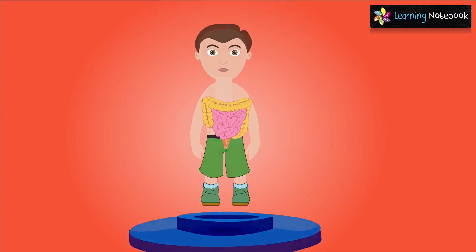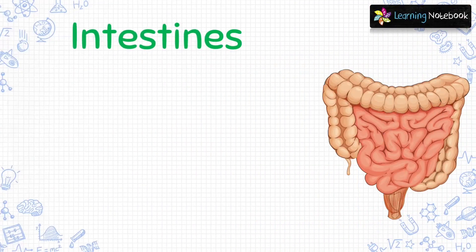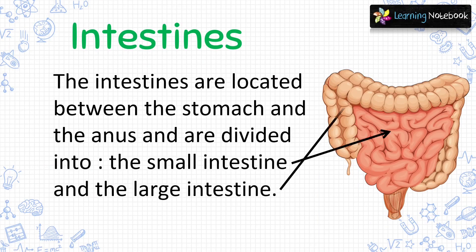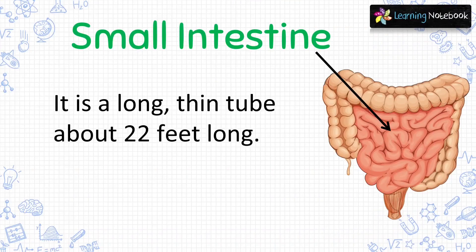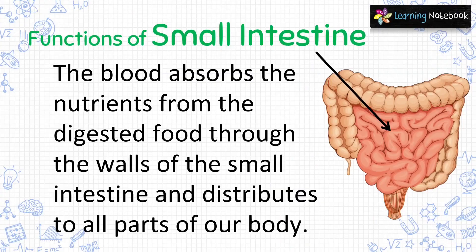The next internal organs are intestines, located between the stomach and the anus, divided into the small intestine and the large intestine. The small intestine is a long thin tube about 22 feet long. Here, the digestion of the food continues and gets completed. The blood absorbs the nutrients from the digested food through the walls of the small intestine and distributes it to all parts of our body.